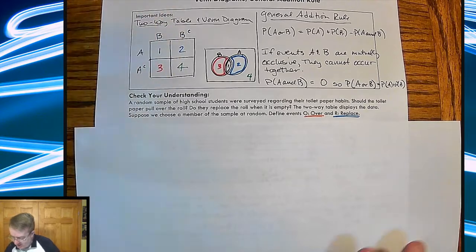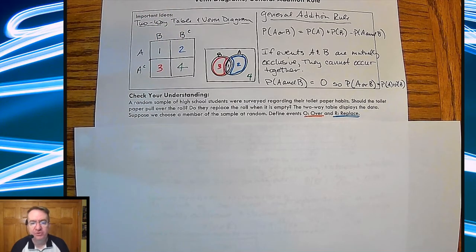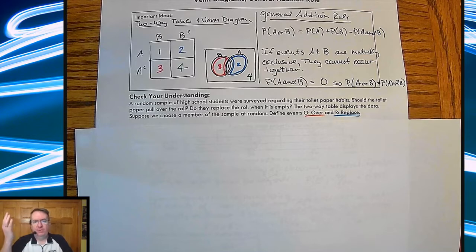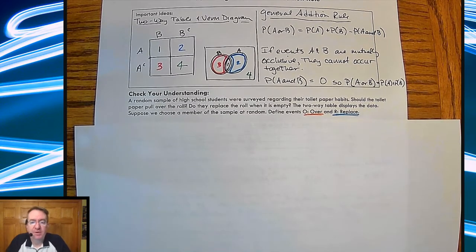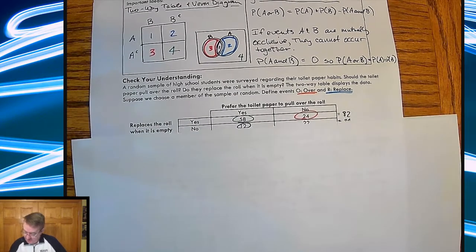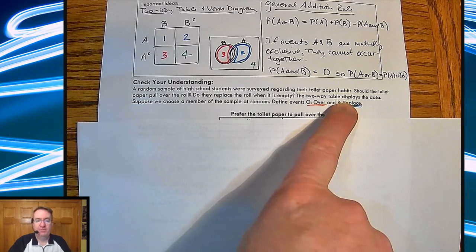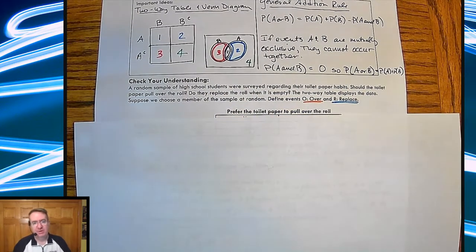Now, in terms of the check your understanding, what's going on here is there's a random sample of high school students who were surveyed regarding their toilet paper habits. Extremely appropriate given the last nine months. Should the toilet paper be pulled over the roll? Of course. Not to judge. Or do they replace, and do they replace the roll when empty? I've got a couple of those people who definitely say no there in my house. Anyway, two-way table displays the data, suppose that we choose members at random, define the events O is over and R is replaced. So take a look at the two-way table, answer the questions while you have pause. I'll come back and you can check to see if you're right.